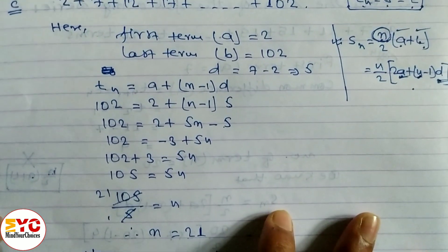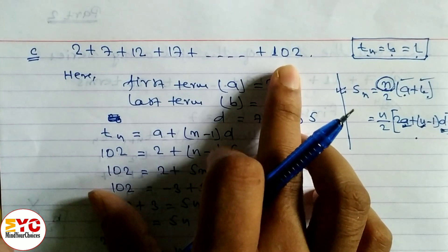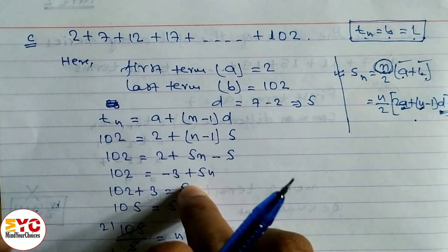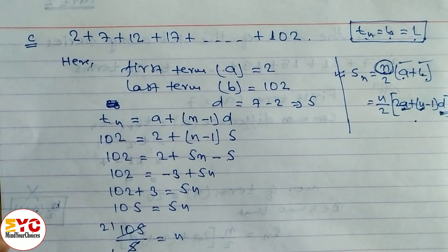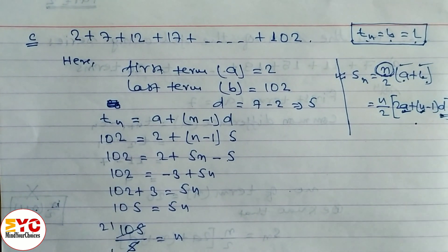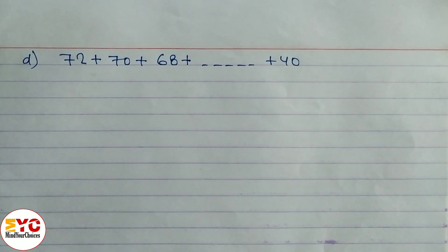Hope you understand this question. Here the number of terms was not given, so first we had to find the number of terms, then find the sum. Now look at question D, which is similar to question C.